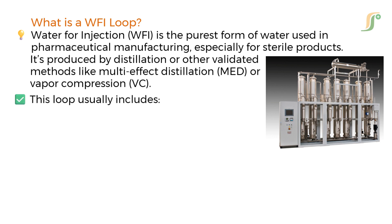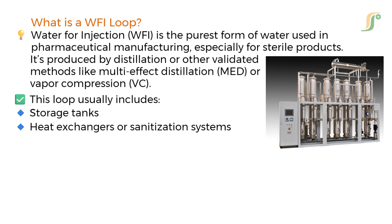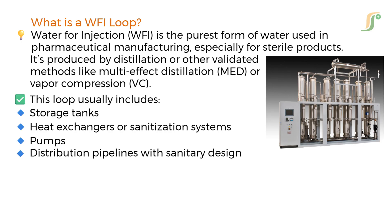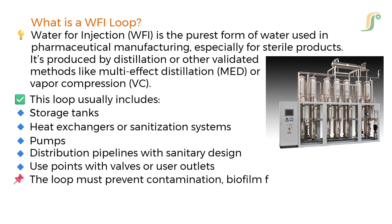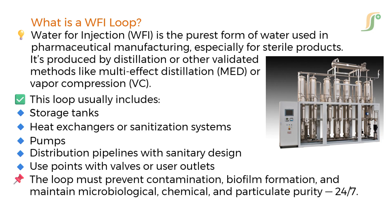This loop usually includes storage tanks, heat exchangers or sanitization systems, pumps, distribution pipelines with sanitary design, and use points with valves or user outlets. The loop must prevent contamination, biofilm formation, and maintain microbiological, chemical, and particulate purity at all times.